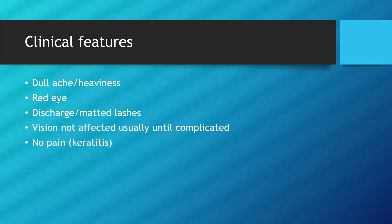If someone suffers from conjunctivitis, the common clinical features are dull ache or heaviness. There is never a sharp pain in the eye unless the intraocular pressure is very high or the cornea is inflamed, as in corneal ulcer or keratitis. So in conjunctivitis there is no sharp pain — it is dull ache or heaviness. Red eye is the most common symptom of conjunctivitis.